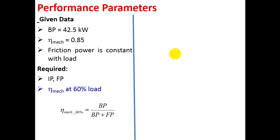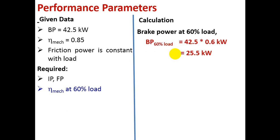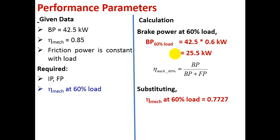Mechanical efficiency at 60 percent equals BP divided by (BP plus FP). First, find brake power at 60 percent load by multiplying brake power at 100 percent load by 0.6, giving 25.5 kilowatt. Substituting into the formula, we get 0.7727, which as a percentage is 77.27 percent.